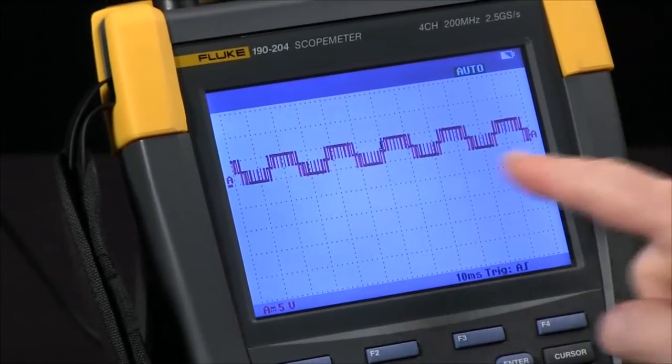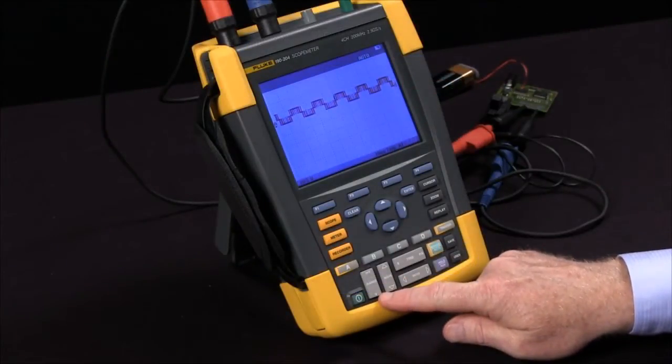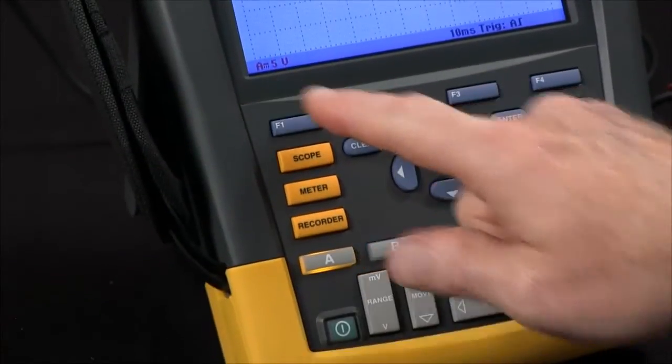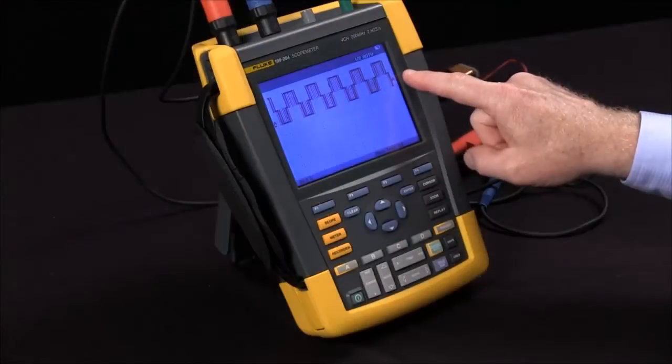I'm going to start off by changing my volts per division for channel A. I've got the rocker switch down here. Right now we're set for five volts per division. Hit the top end of this for millivolts. We change to two. We've got a bigger display.